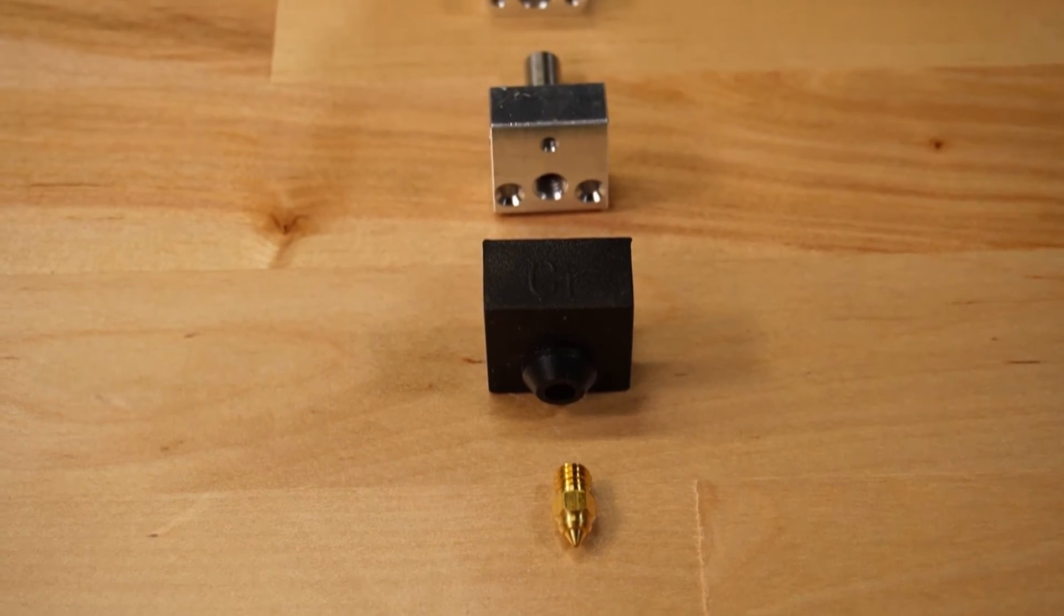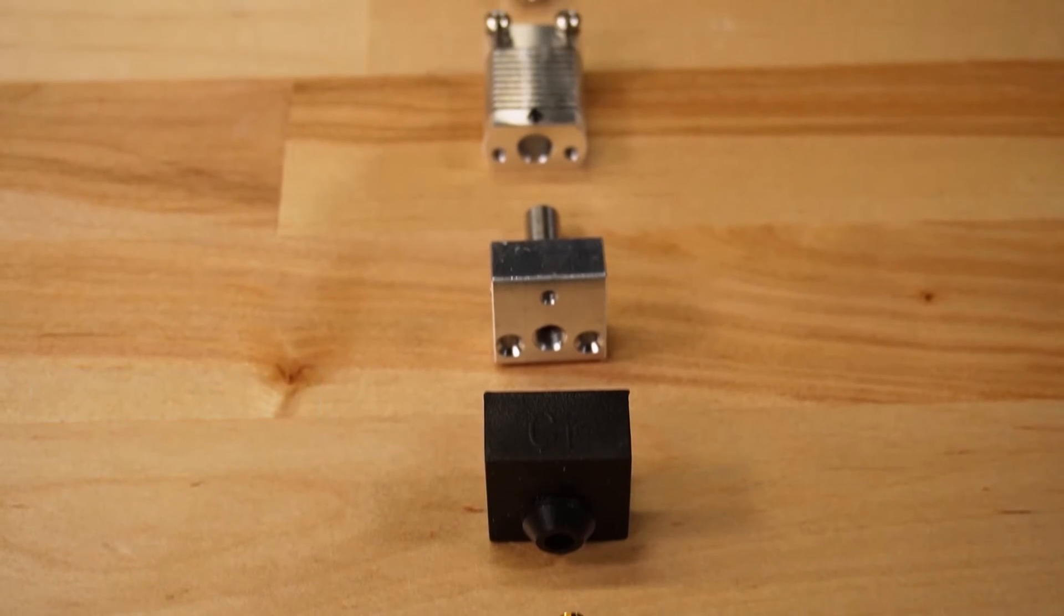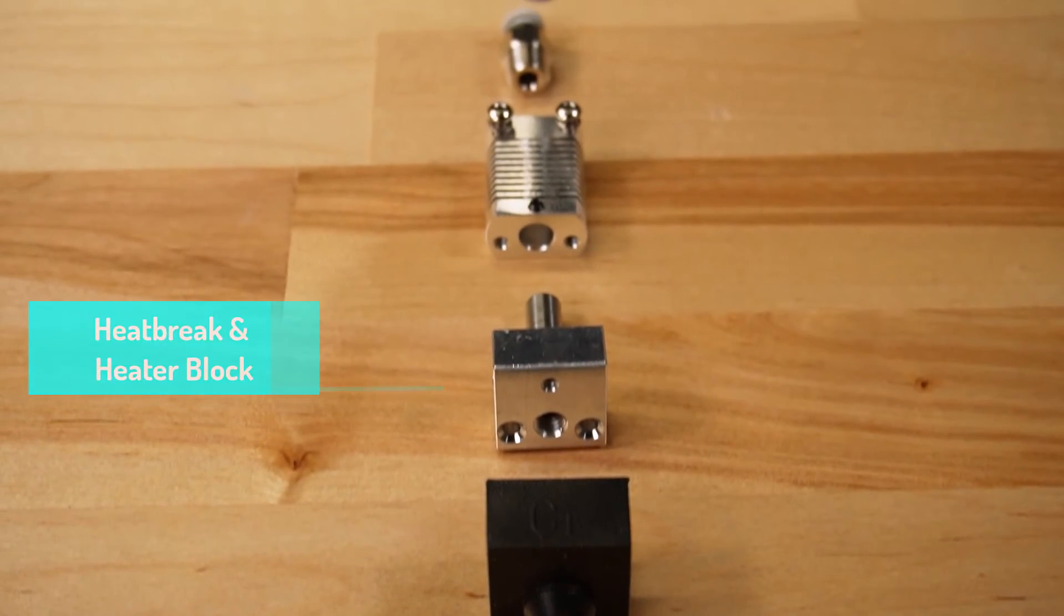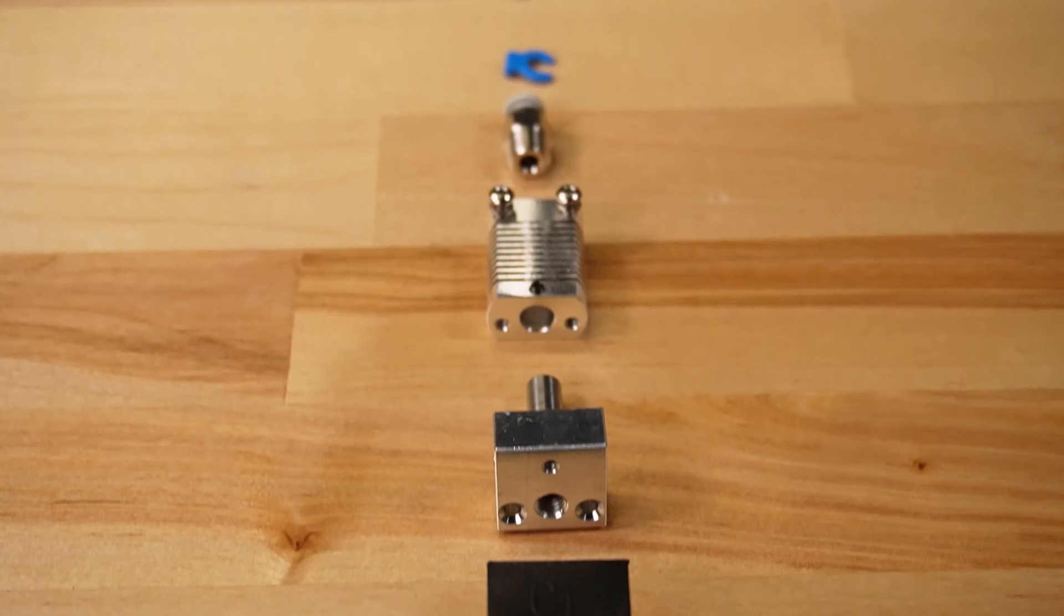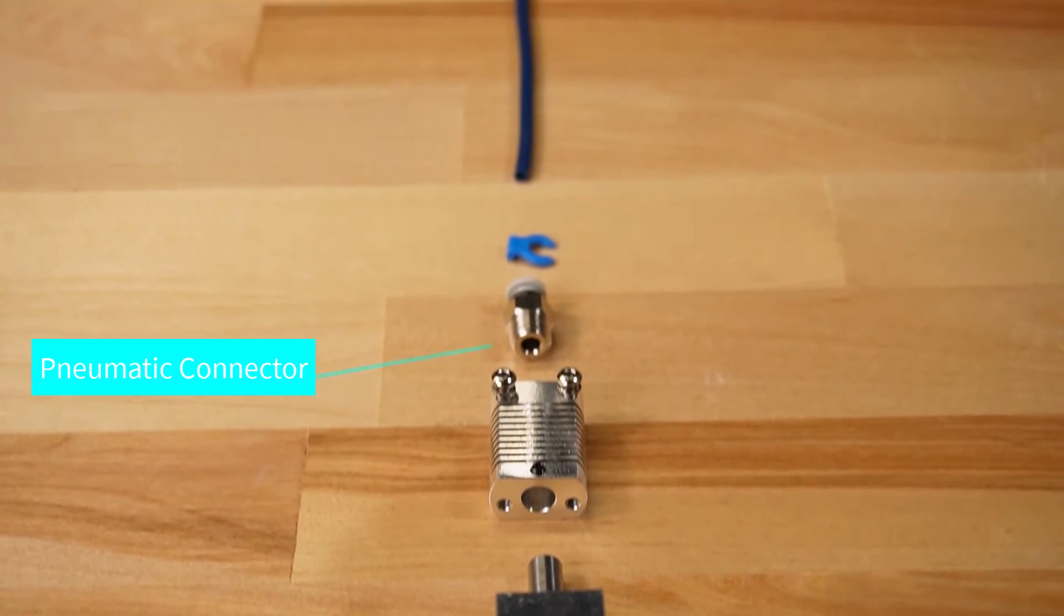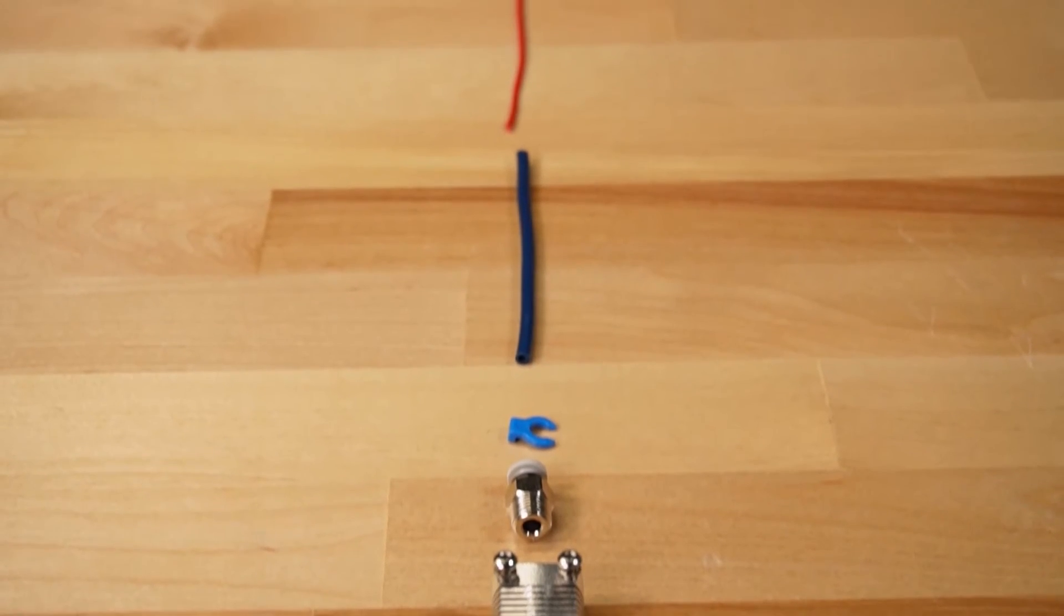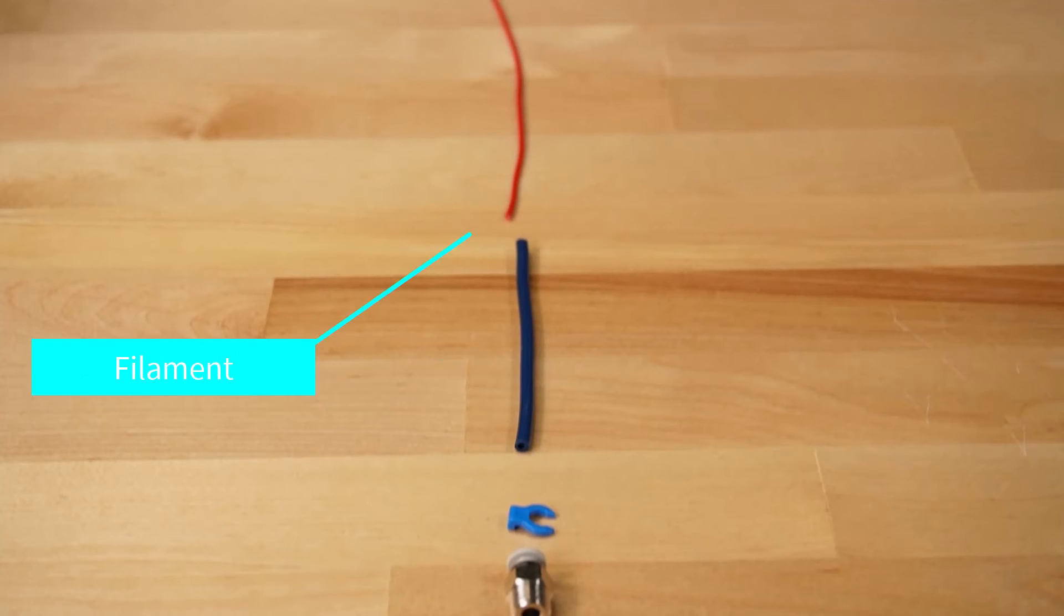Some of the most common problems that you'll face take place here in this assembly of the printer. Things from clogs, the thermistor not reading, or the heater cartridge not heating up are all things that are going to happen in this area. So again, knowing what the parts are called can help you troubleshoot that and get back to 3D printing more quickly.